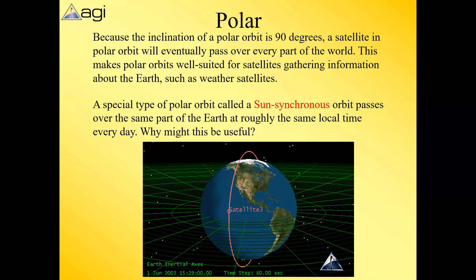Polar orbits are a special condition where the inclination is 90 degrees. Over time, especially at lower altitudes, a polar orbit satellite will fly over every single part of the earth — the north pole, south pole, every longitude and latitude. A special type called Sun-synchronous passes over the same part of earth at roughly the same local time each day, useful for monitoring atmospheric conditions, temperatures, or air pollution at a consistent time.